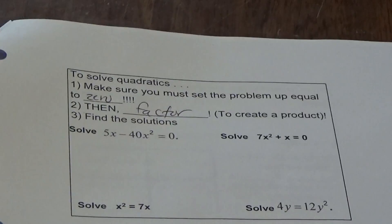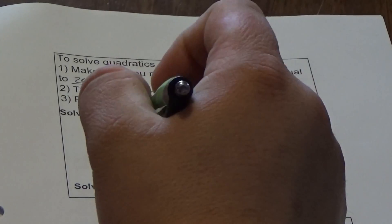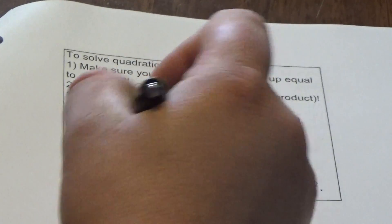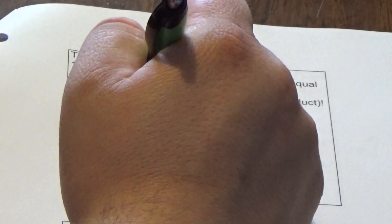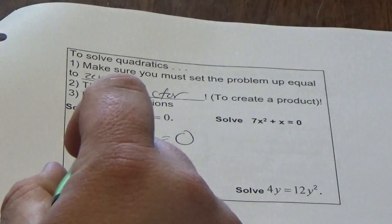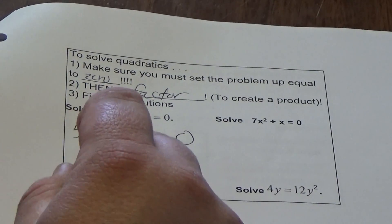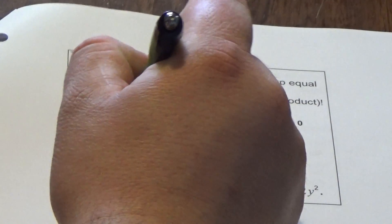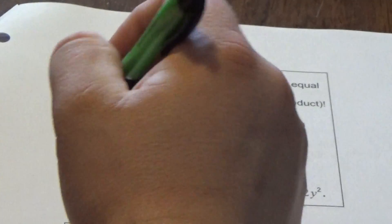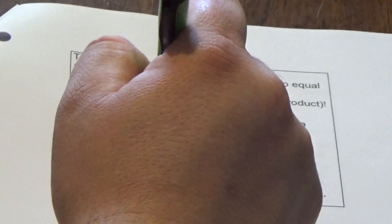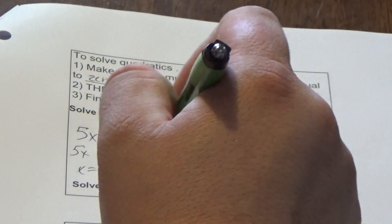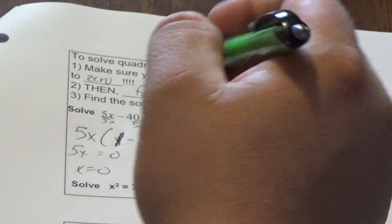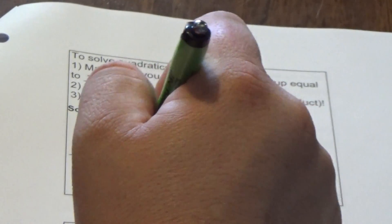If we set the problem equal to zero, then we can factor in order to create a product. That requires us to find a GCF, so the GCF here is 5x. Once I took the 5x out, I divided both this and this by 5x, so I get 1 minus 8x. Set each side equal to 0, so x equals 0. I subtract 1, divide by 8, x equals 1/8. Set builder notation: {0, 1/8}.